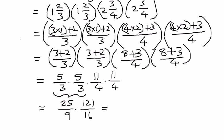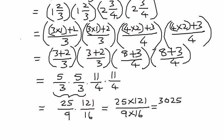Therefore, we multiply: 25 times 121, divided by 9 times 16. 25 times 121 equals 3,025. And 9 times 16 is 144. So we have 3,025 divided by 144. The numerator is larger than the denominator, and therefore we can express this as a mixed number — right now it is in improper fraction format.